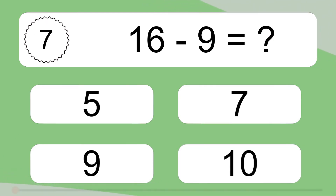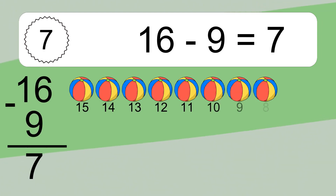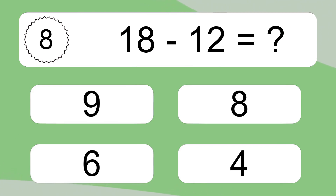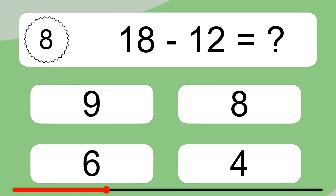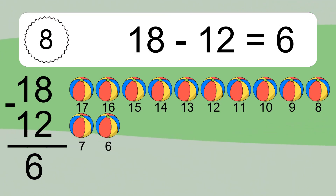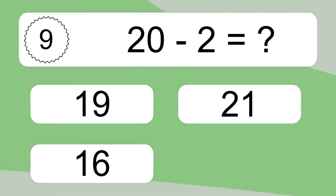16 minus 9 equals what? 16 minus 9 equals 7. Let's count it: 15, 14, 13, 12, 11, 10, 9, 8, 7. 18 minus 12 equals what? 18 minus 12 equals 6. Let's count it: 17, 16, 15, 14, 13, 12, 11, 10, 9, 8, 7, 6.